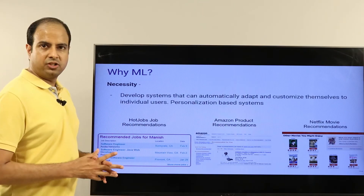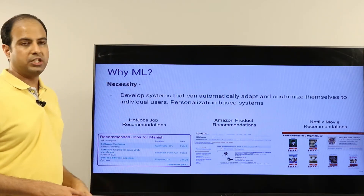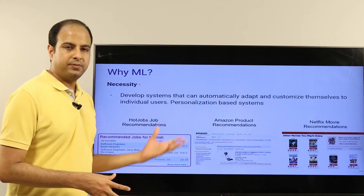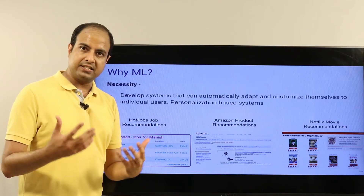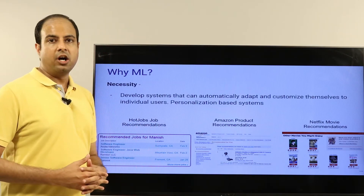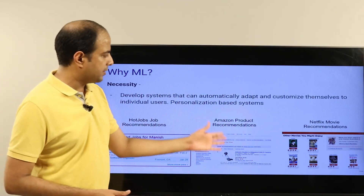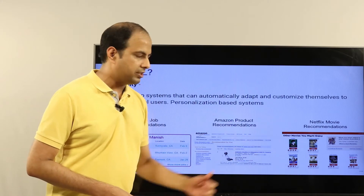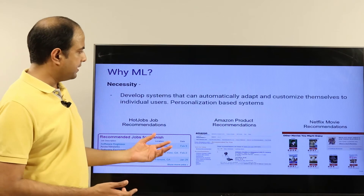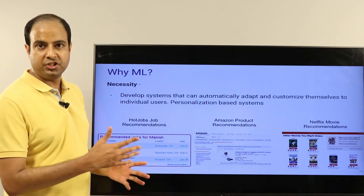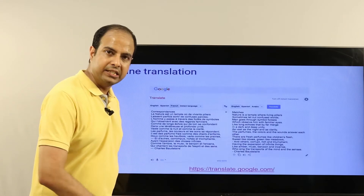Machine learning is also necessary for developing systems that can automatically adapt and customize themselves to individual users. Such systems are called personalization-based systems, and they include personalized search, personalized recommendation systems, and personalized ads. These include recommendations on job portals, Amazon, and Netflix — for jobs, products, and movies — recommended in a personalized way based on your history or based on what similar users have bought. All of that requires machine learning.